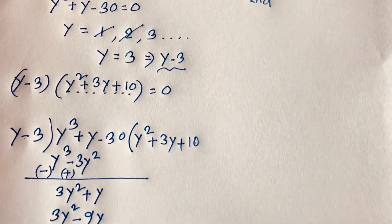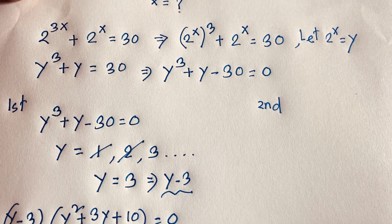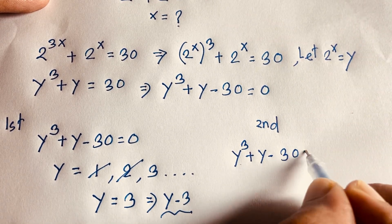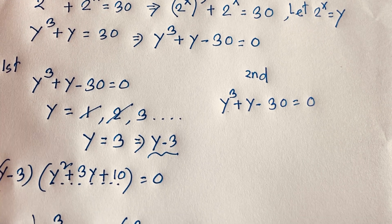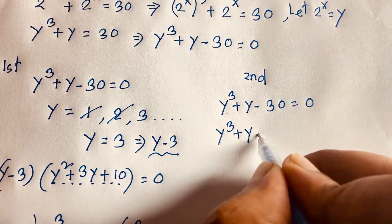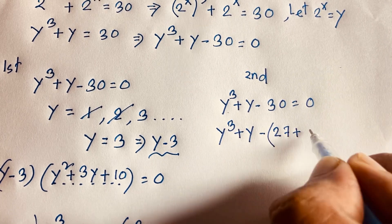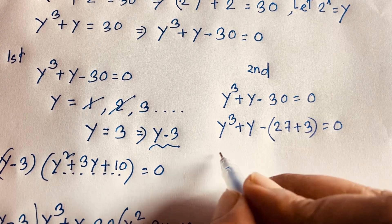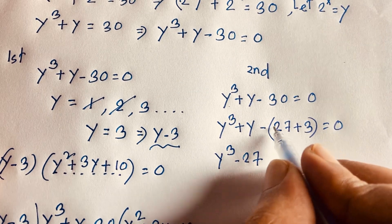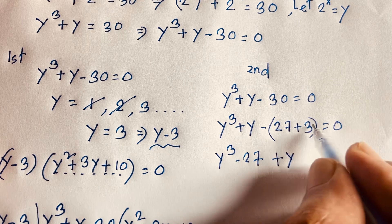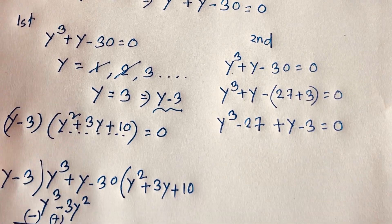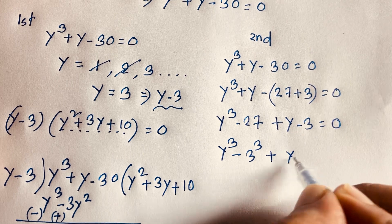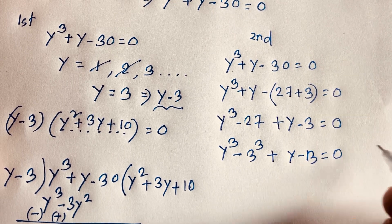Now for the second method. We start again with y³ + y − 30 = 0. We observe that 30 = 27 + 3, so we rewrite: y³ − 27 + y − 3 = 0.